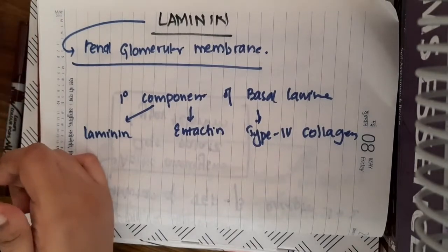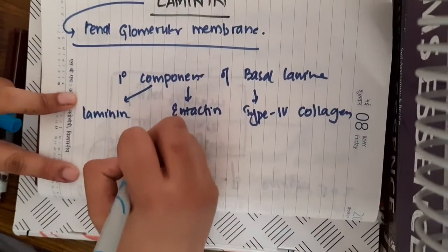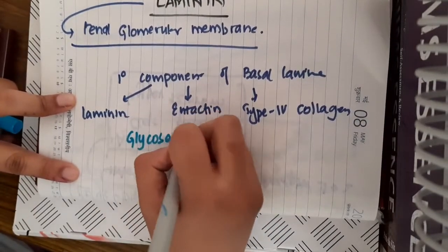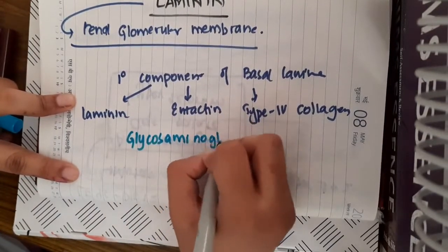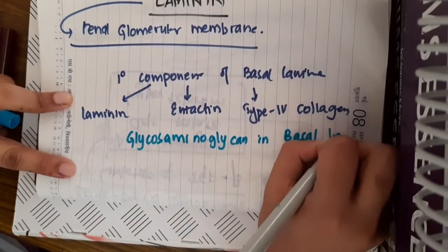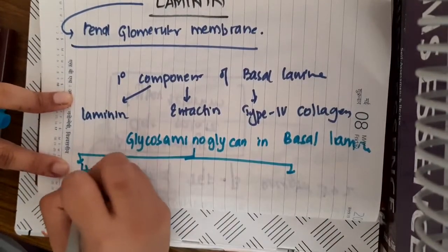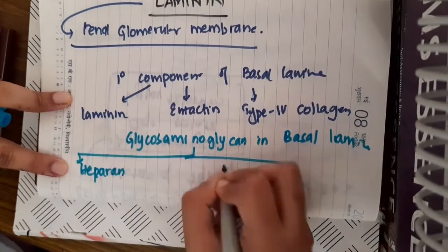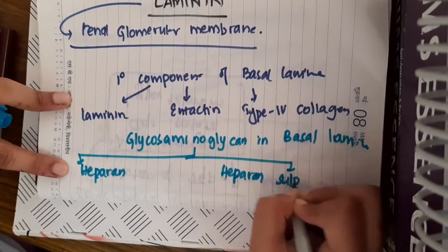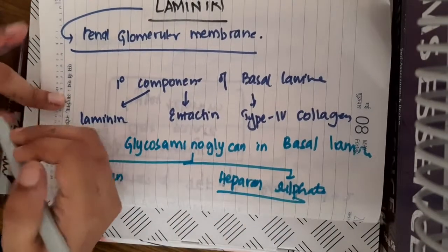As we are learning about the basal lamina, one more question has been asked in the last NEAT examination: what is the glycosaminoglycan present in the basal lamina of the kidney? The answer is mainly heparin and heparin sulfate. If both are given in the options, it is safer to choose heparin sulfate.